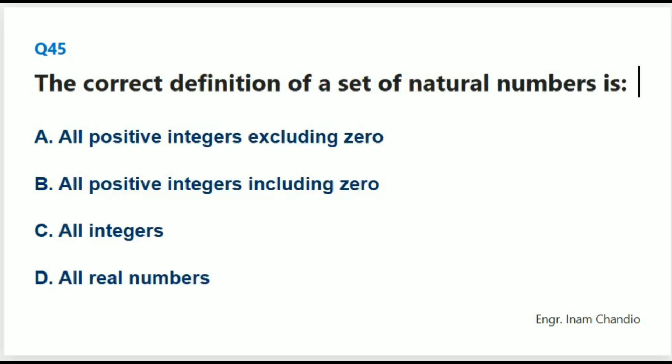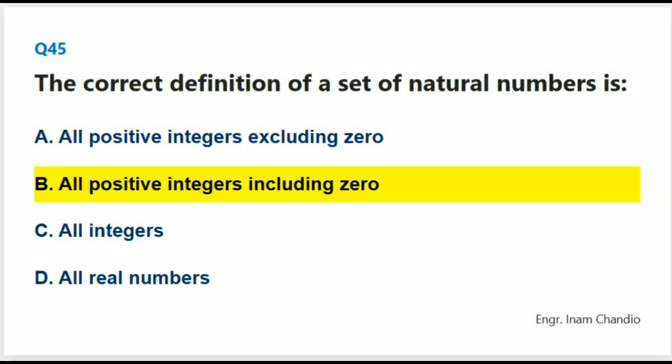The correct definition of a set of natural numbers is: The correct answer is B. All positive integers including zero.